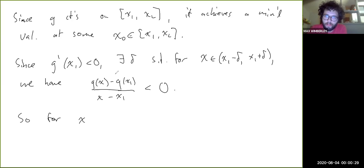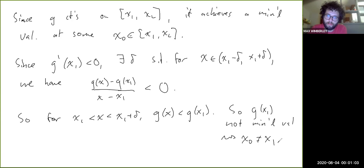So g(x) is less than g(x₁). So g(x₁) is not the minimal value, meaning x₀ is not equal to x₁. A similar argument shows that x₀ is not equal to x₂. So x₀ is in the open interval (x₁, x₂).